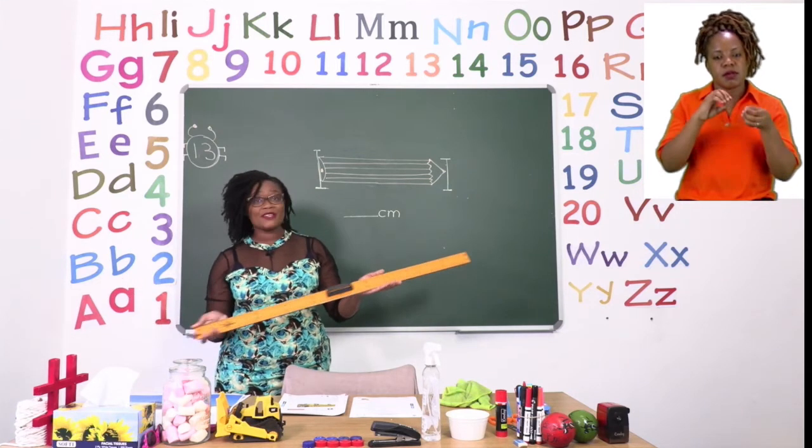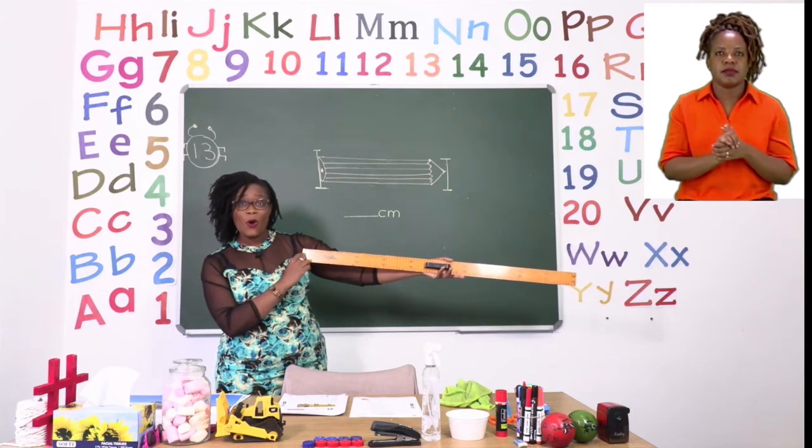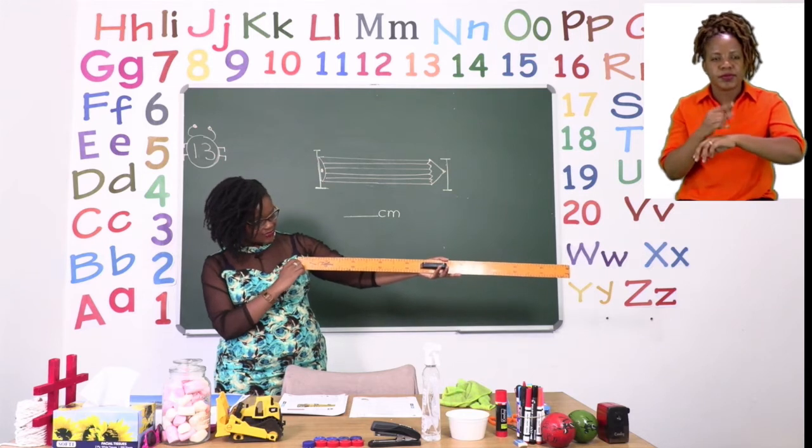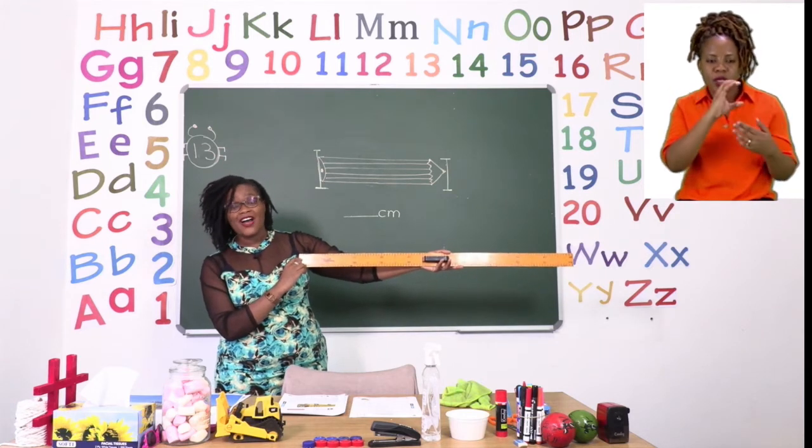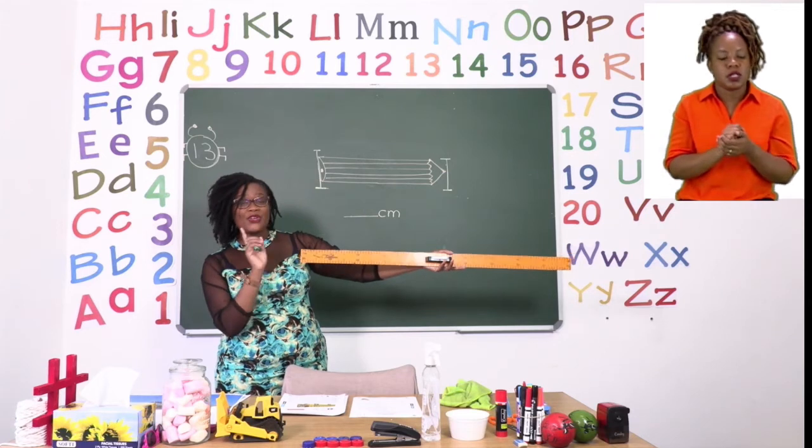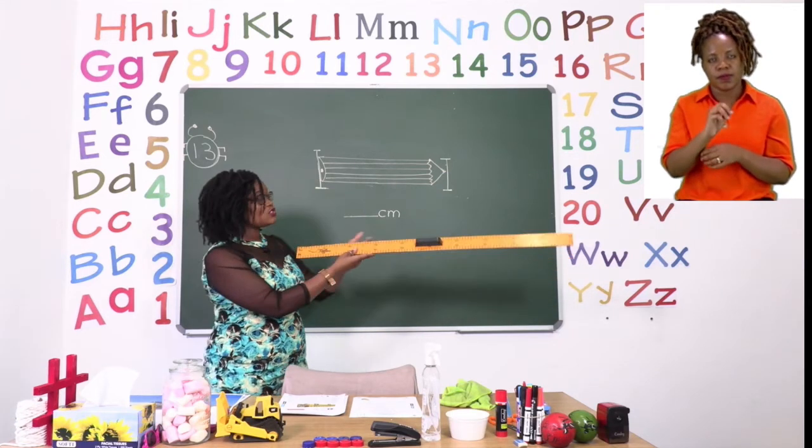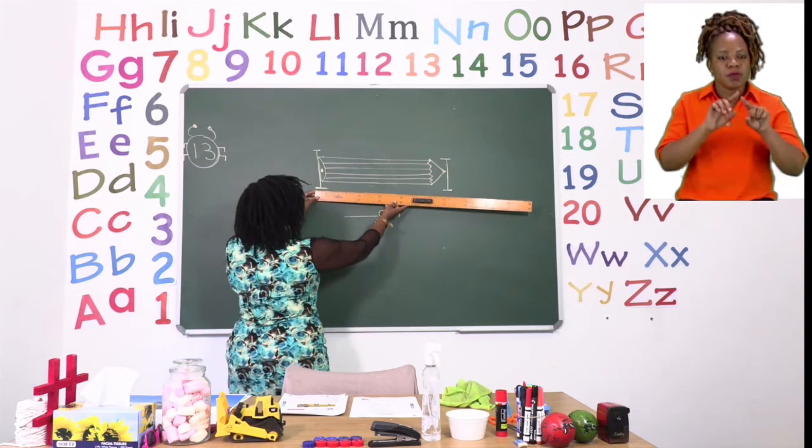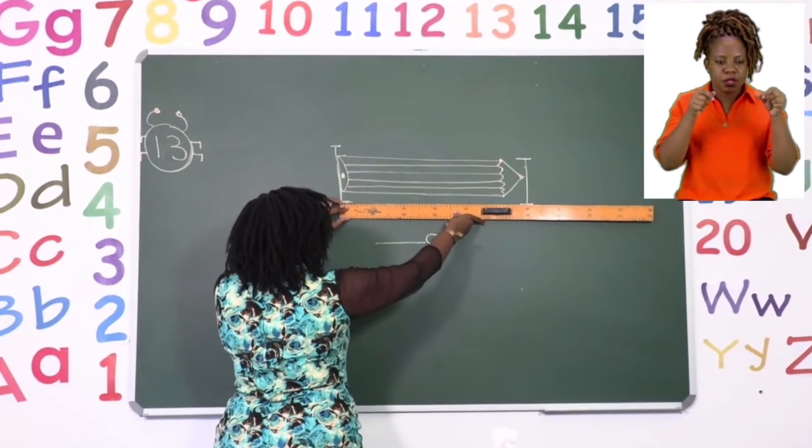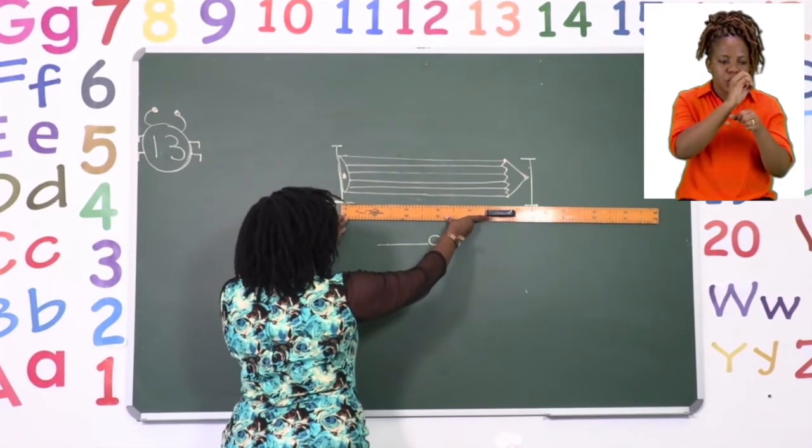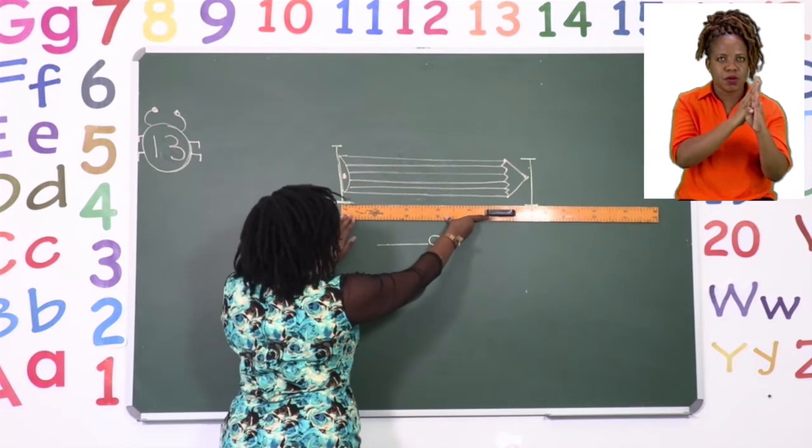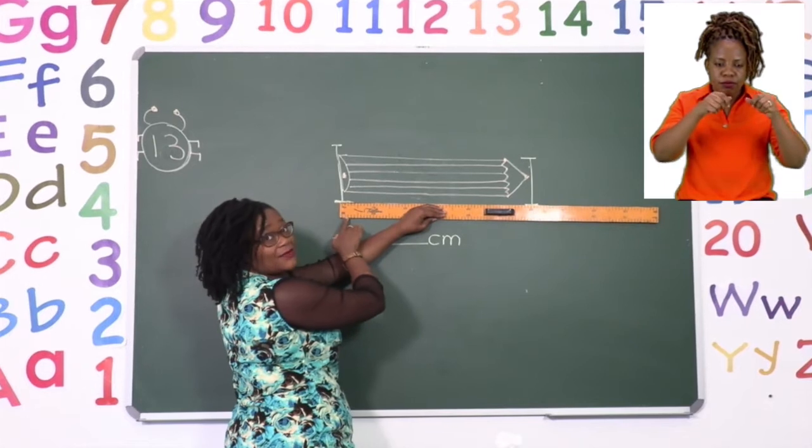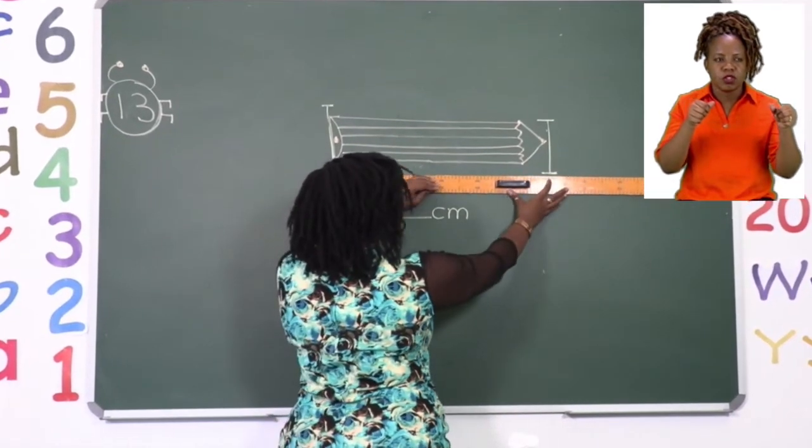As you are starting to measure, boys and girls, you need to look for the zero or for the centimetre line that is just on the edge. That is where you are going to start your measurement. Now when you are measuring an object, boys and girls, you need to start from where the object either ends or begins, and you put your ruler right there in line with the zero. When you are done measuring, you'll be taking a look at where it's coming from. So we start measuring from the left, going to the right.